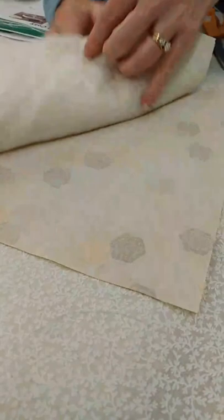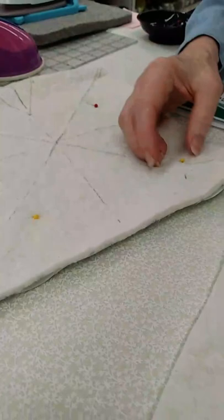Alrighty, so they're quite simple. We're going to give you a quick run through here. You're going to cut for each bowl two 10-inch squares of fabric and batting. They can be coordinated, they can be matching, it does not matter.